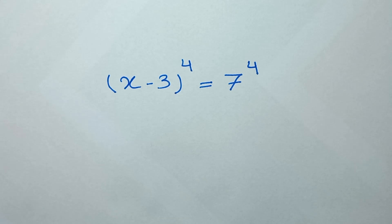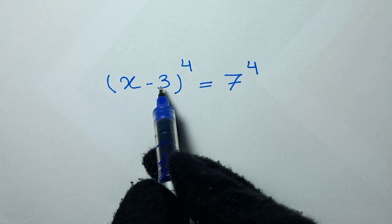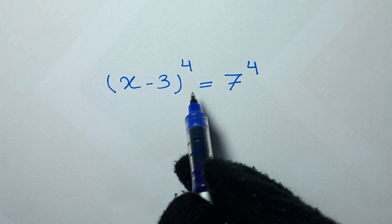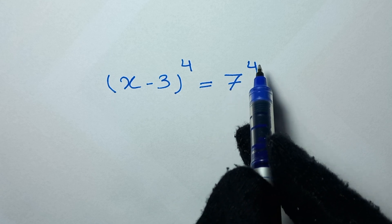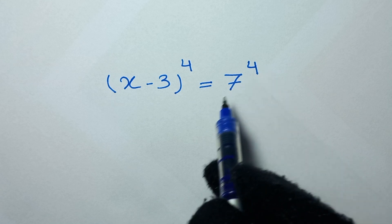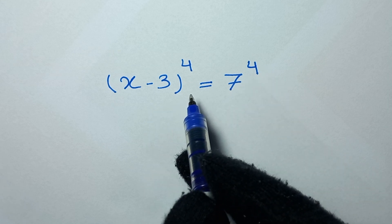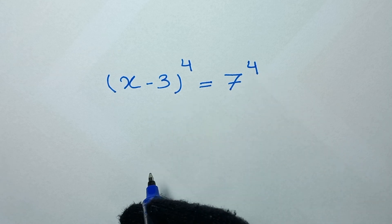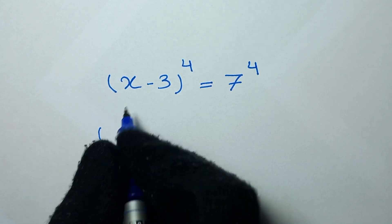Hello my friends, you're welcome to solve this past problem which is (x minus 3) to the power of 4 is equal to 7 to the power of 4. We need to find the values of x. In the first step we write this out.